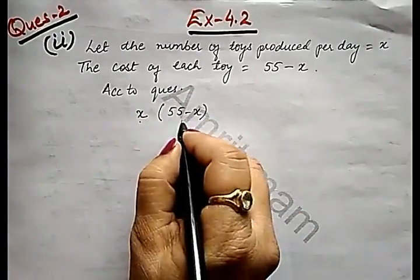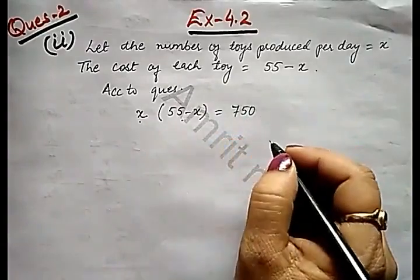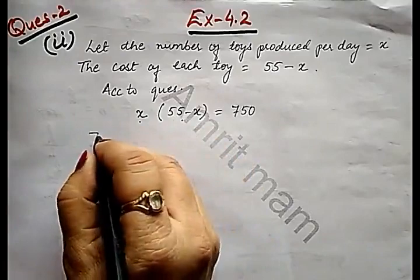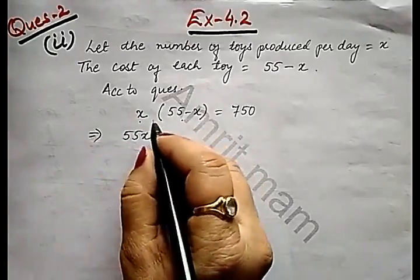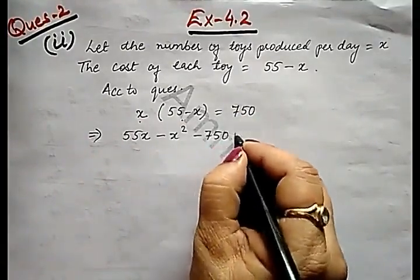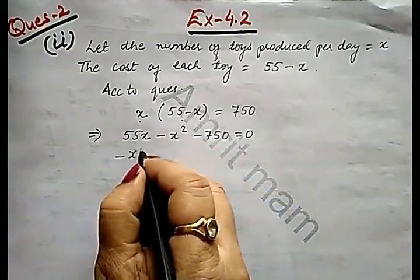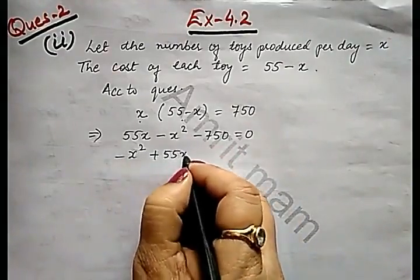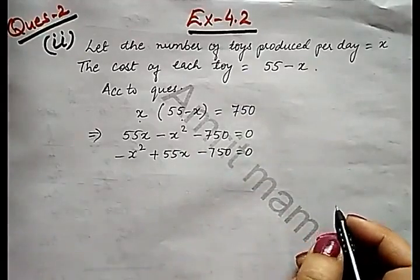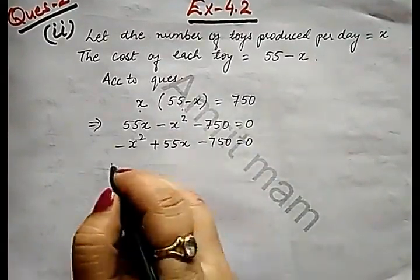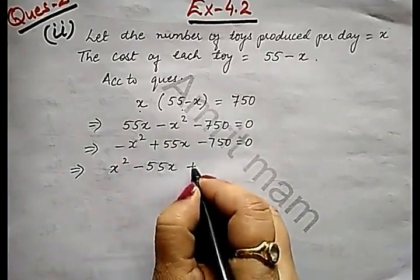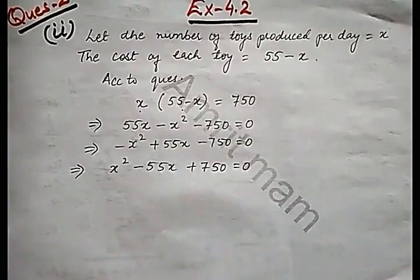According to quotient, the number of toys produced into the cost equals 750. That is x into (55 minus x) equals 750. Simplifying: x into 55 gives 55x, x into minus x is minus x square, transposing gives minus x square plus 55x minus 750 equals 0. Taking negative common from both sides, it becomes x square minus 55x plus 750 equals 0.